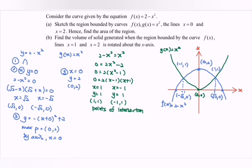Sketch the region bounded by the curve f(x), g(x), and the line x equals to 0 and x equals to 2. Since square root of 2 is approximately 1.4142, the value x equals 2 is to the right of √2 on the graph. So here we have region R and another region R identified on the sketch.